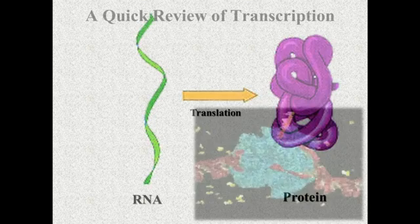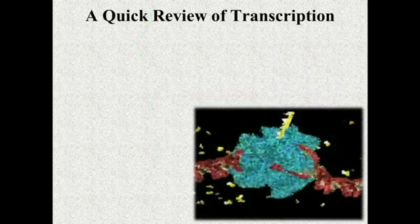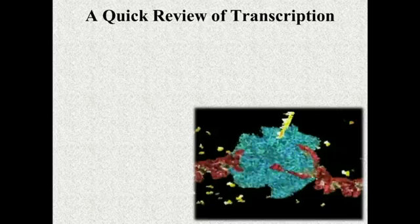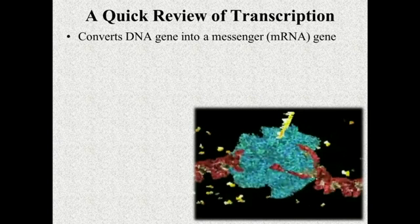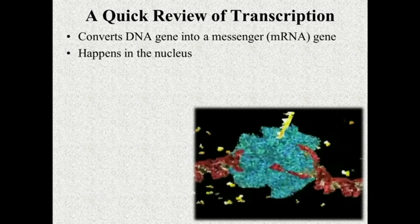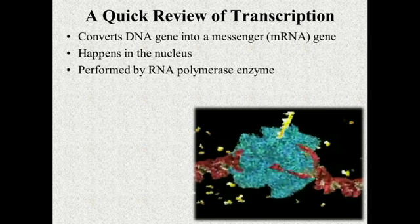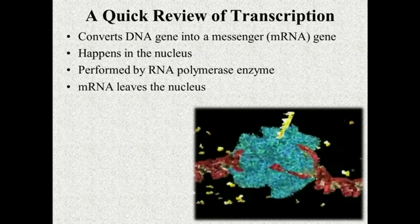Before we go further, I want to review what we talked about in the last vodcast, which was transcription. In transcription, we are converting from DNA to messenger RNA — that's the first part of protein synthesis. Converting the gene, which is in DNA, into a messenger RNA. This happens in the nucleus, performed by an enzyme called RNA polymerase, which you see in this photograph here. This big blue blob is the RNA polymerase enzyme. Then the mRNA leaves the nucleus and travels out to a ribosome in the cytoplasm.